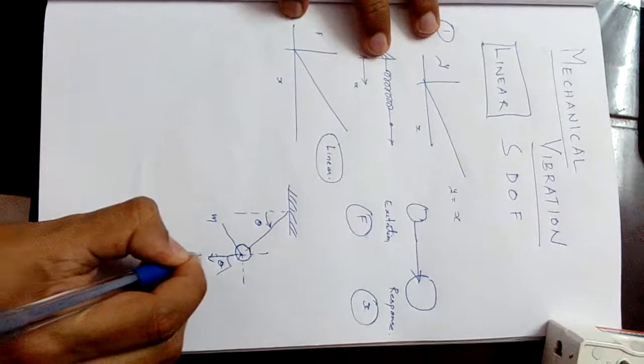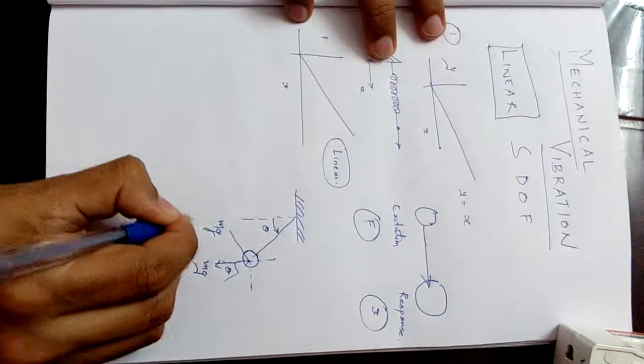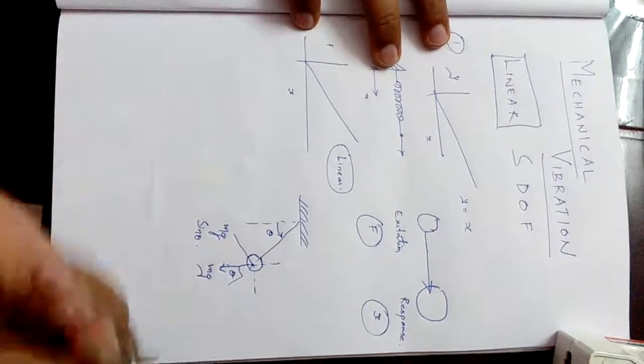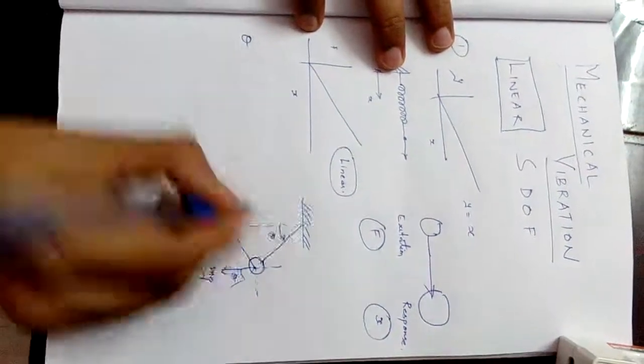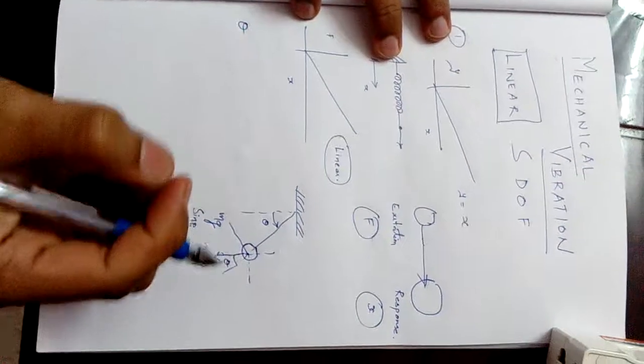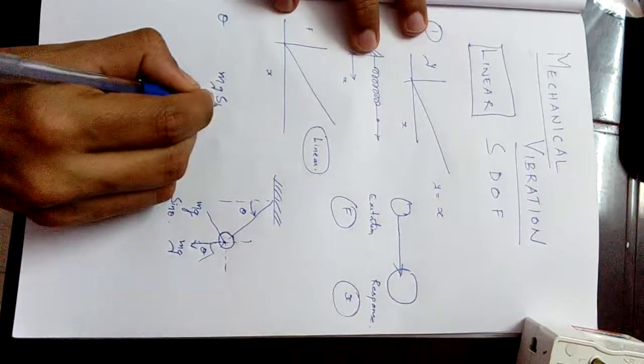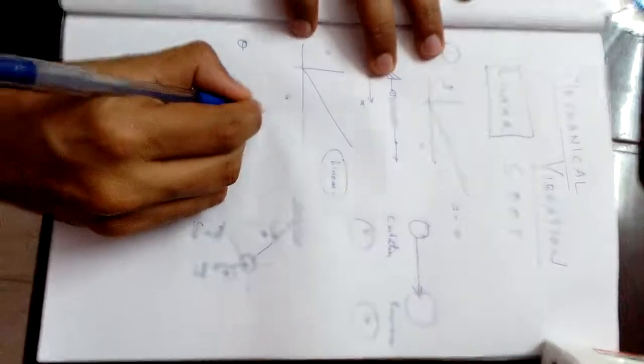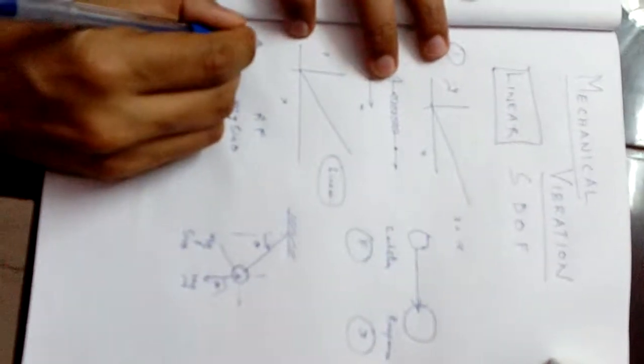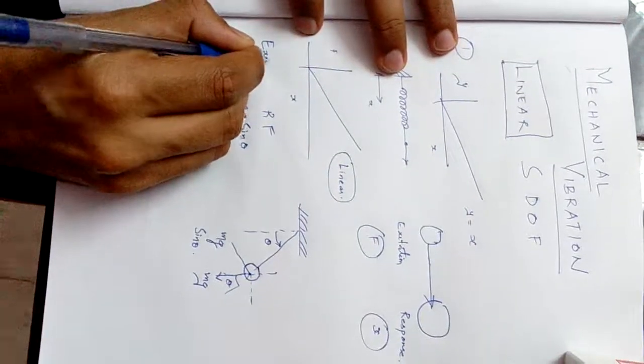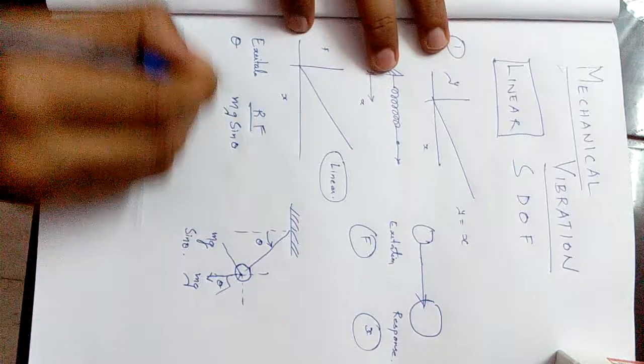The force is mg, so the restoring force will be mg sin(theta). Theta is the amount by which I am disturbing the system. mg sin(theta) is the restoring force and this is the response. Theta is your excitation that you're providing on the system.